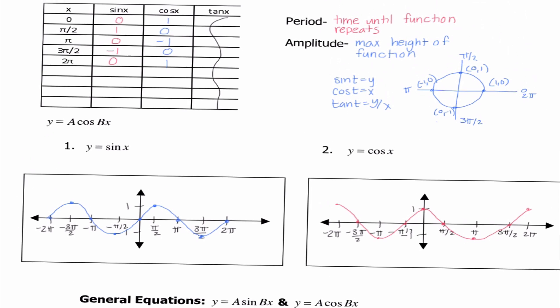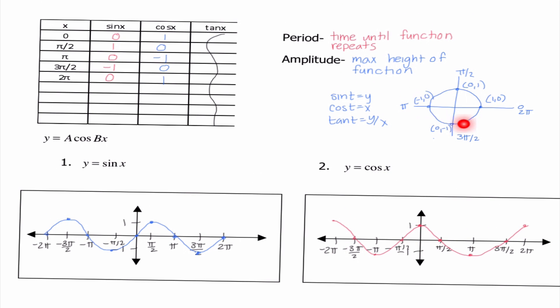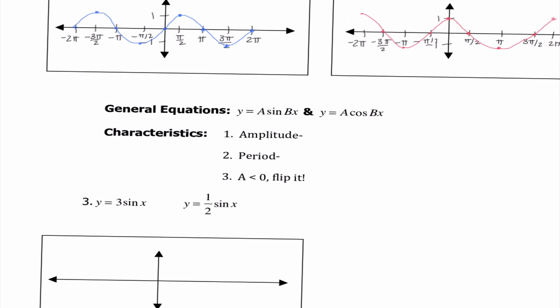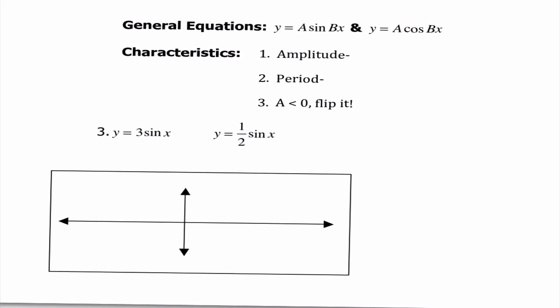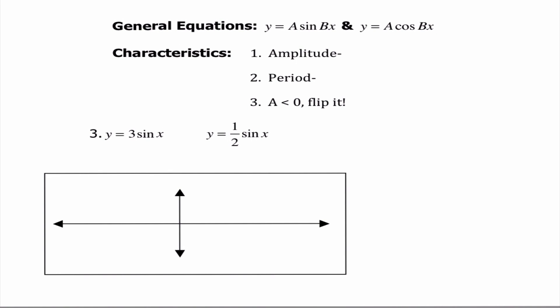All these values are coming from our unit circle. Looking at our general equations, there are three characteristics we list on every graph: the amplitude, found by taking the absolute value of A; the period, which is 2 pi over B; and if A is negative, we flip the graph — this is a reflection over the x-axis.